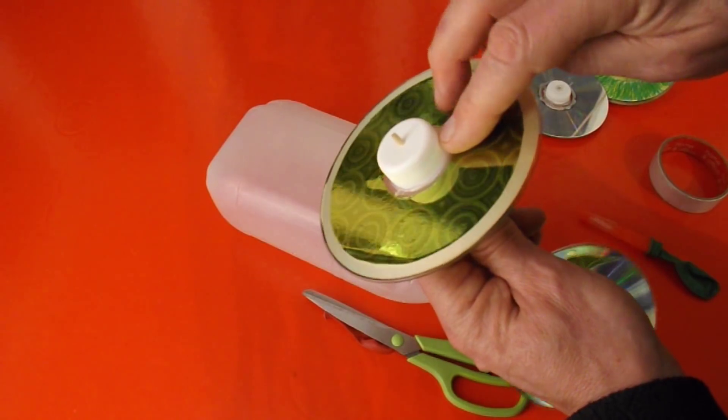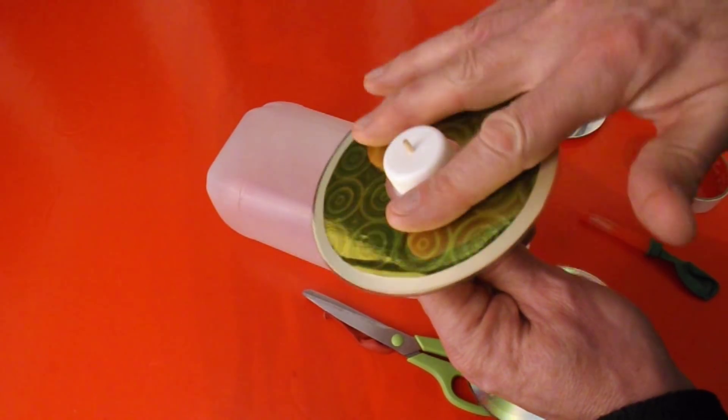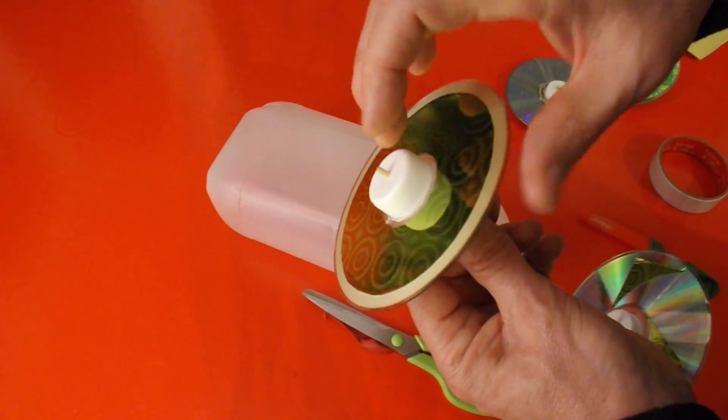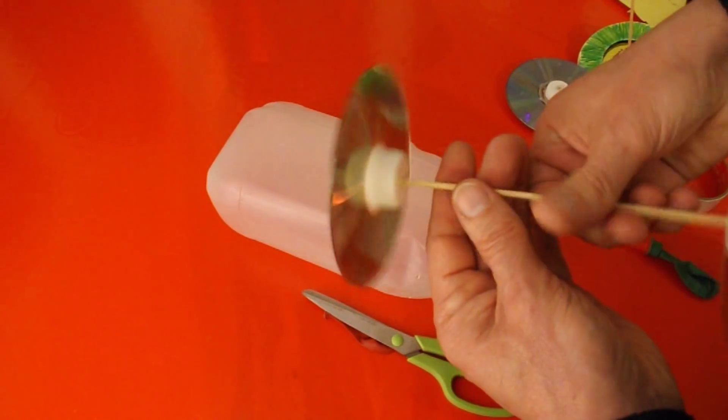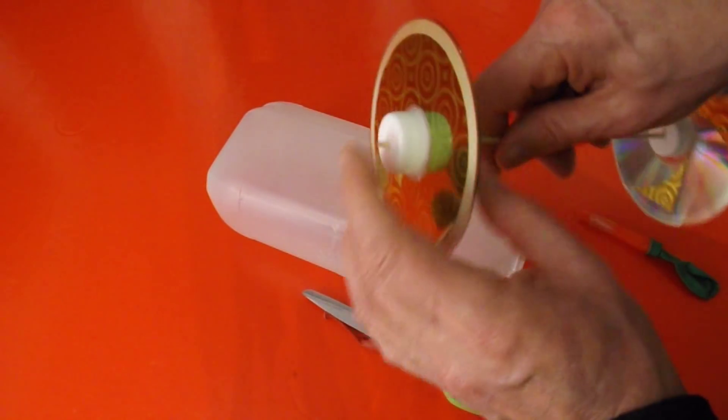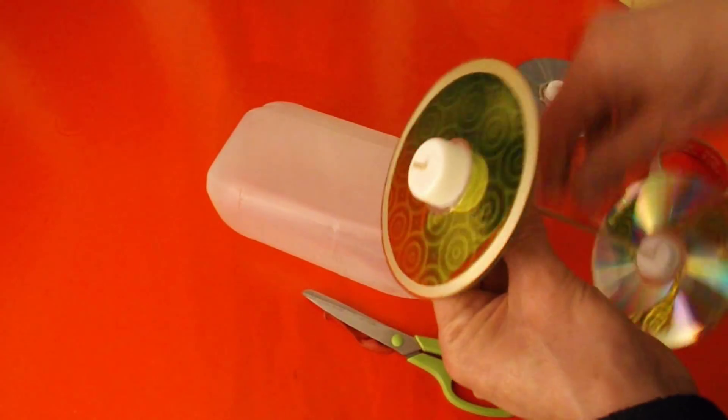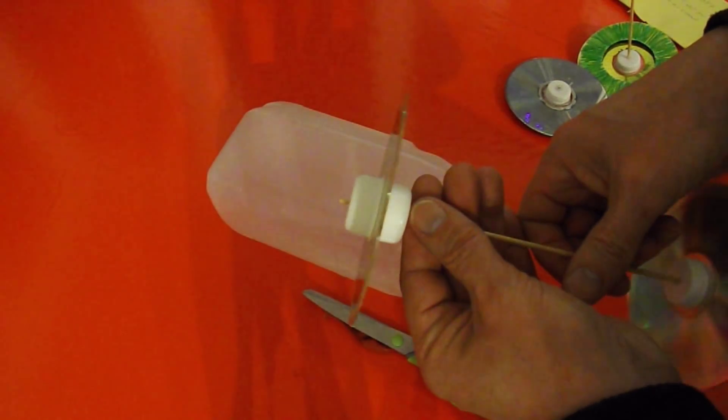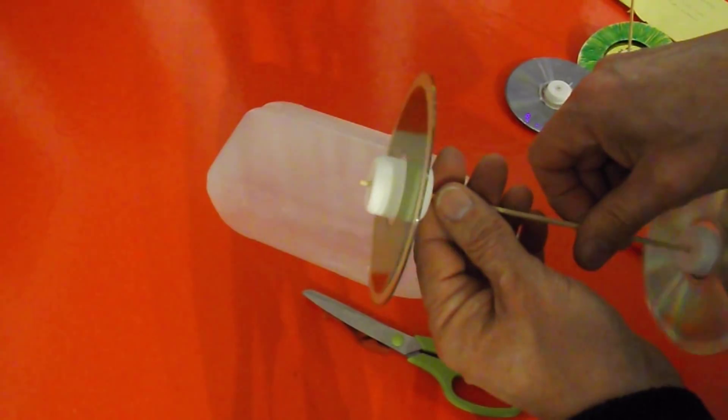Instead of bottle tops you could just put pieces of cardboard over there. Because your problem is the middle of the CD has got a big hole in it and your axle won't stay in place. So if you put cardboard on both sides covering the hole and then drill a hole through the middle of the cardboard, that will hold your axle in place.